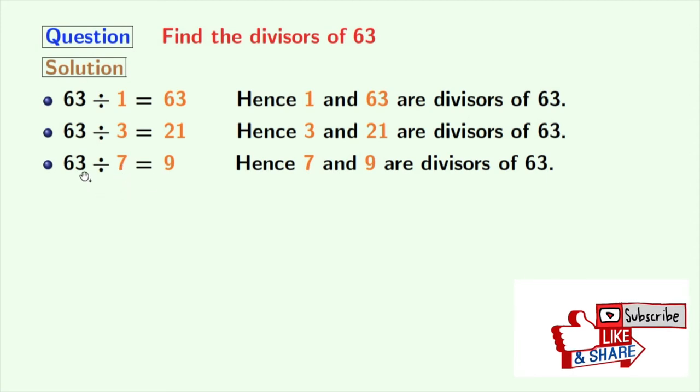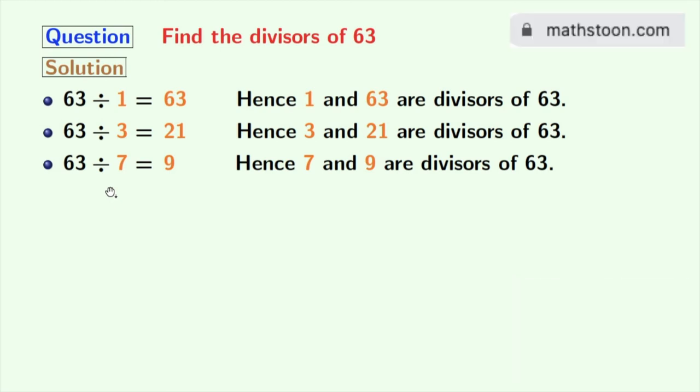Between 7 and 9 comes 8, but 8 does not divide 63. 9 is already here, so we will stop right now. Now look that we have all the divisors of 63 in orange colors. These numbers are 1, 3, 7, 9, 21, and 63.